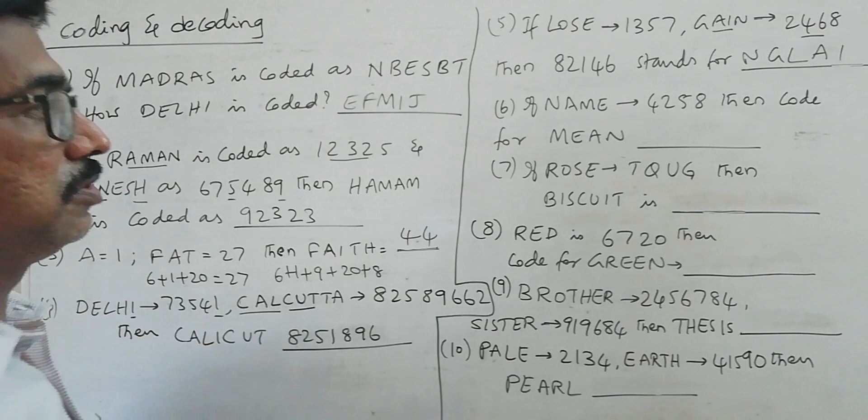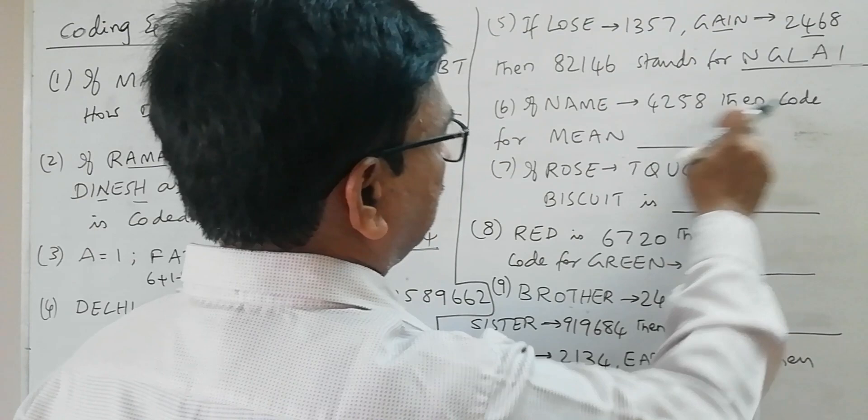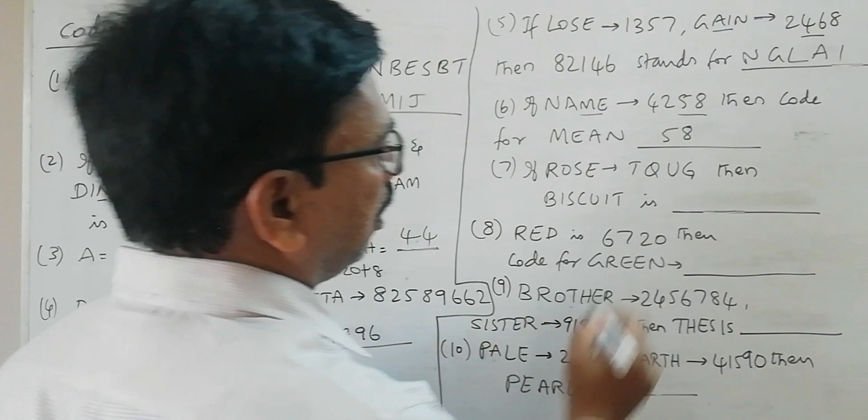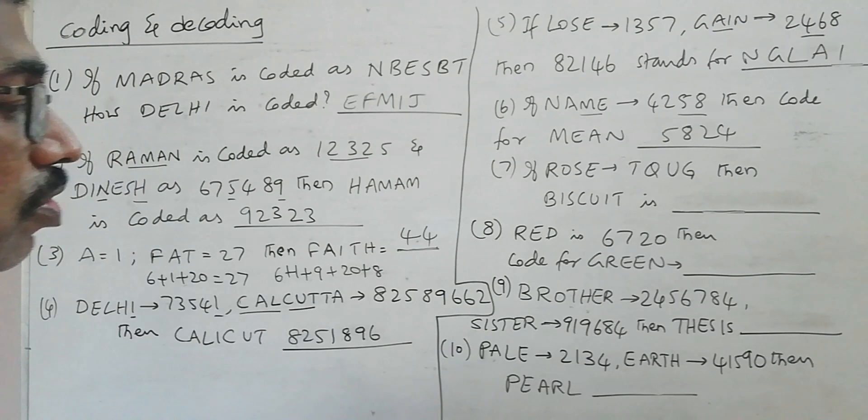In the same way we have NAME coded as 4258, then code for MEAN. So M-E is 58, and A-M is 24. So 5824 is the code for MEAN.